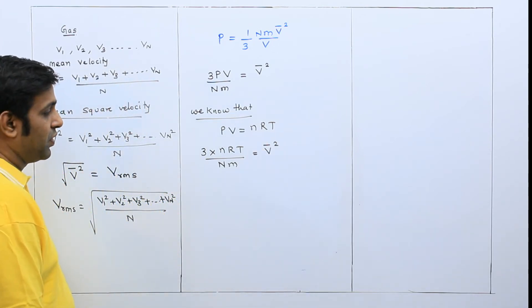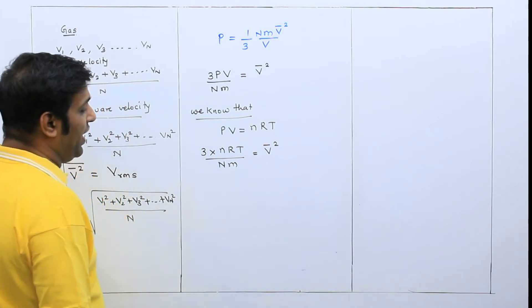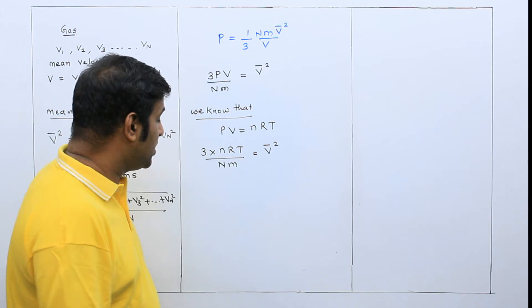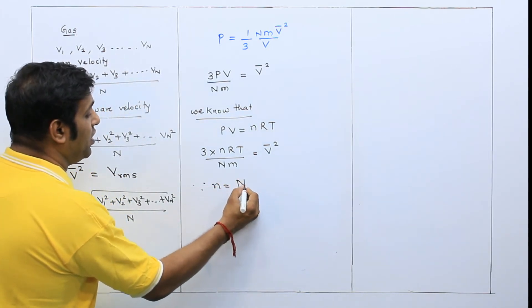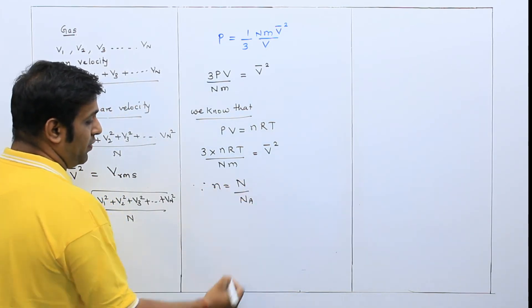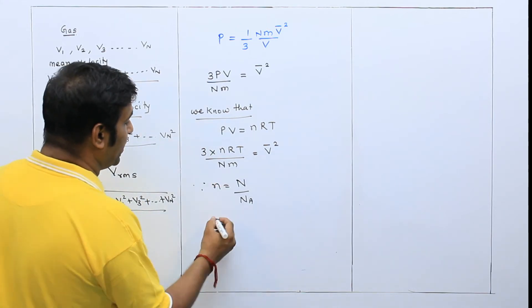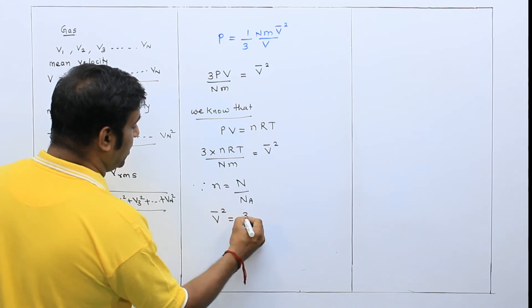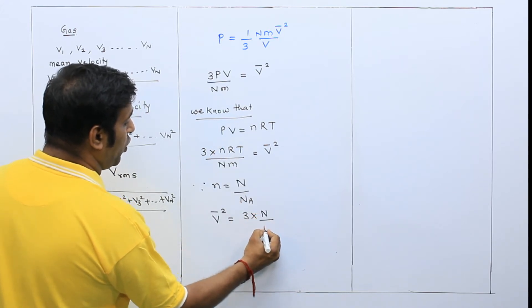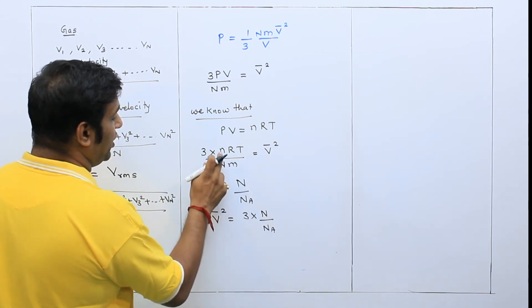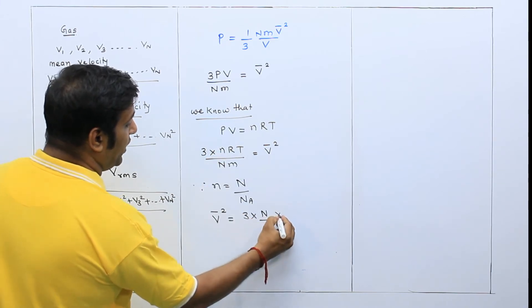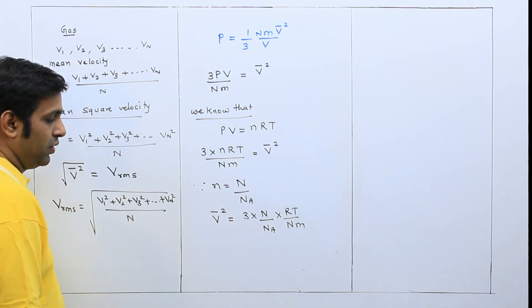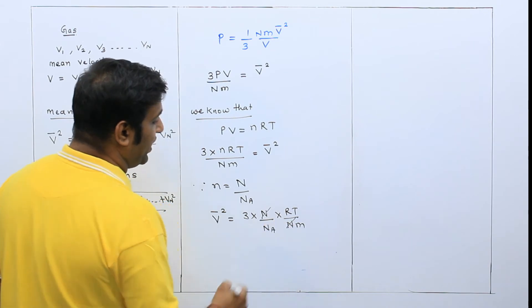Now my dear student, in place of small n, what is small n? In the first lecture I told you what is small n. Since we know that small n is capital N upon NA. If I substitute this value here, then what will I get? V bar square is equal to 3 into capital N upon NA into RT. And in the denominator I already have Nm. This N and N will cancel.